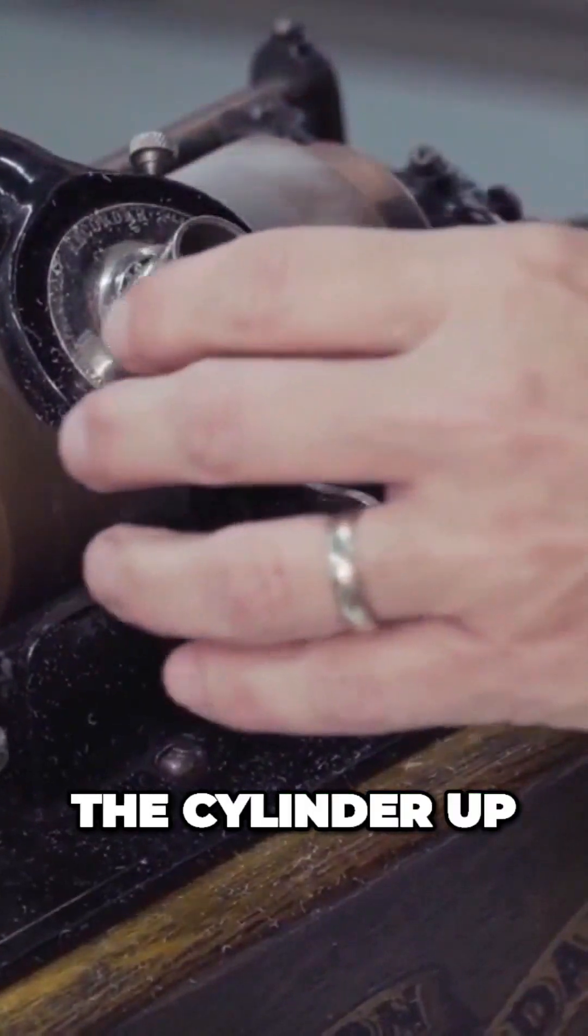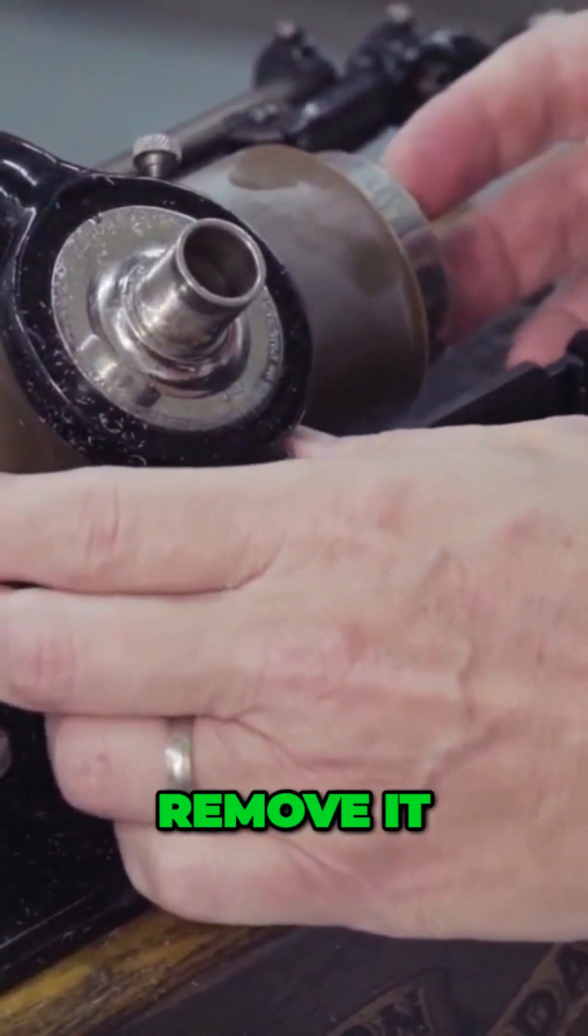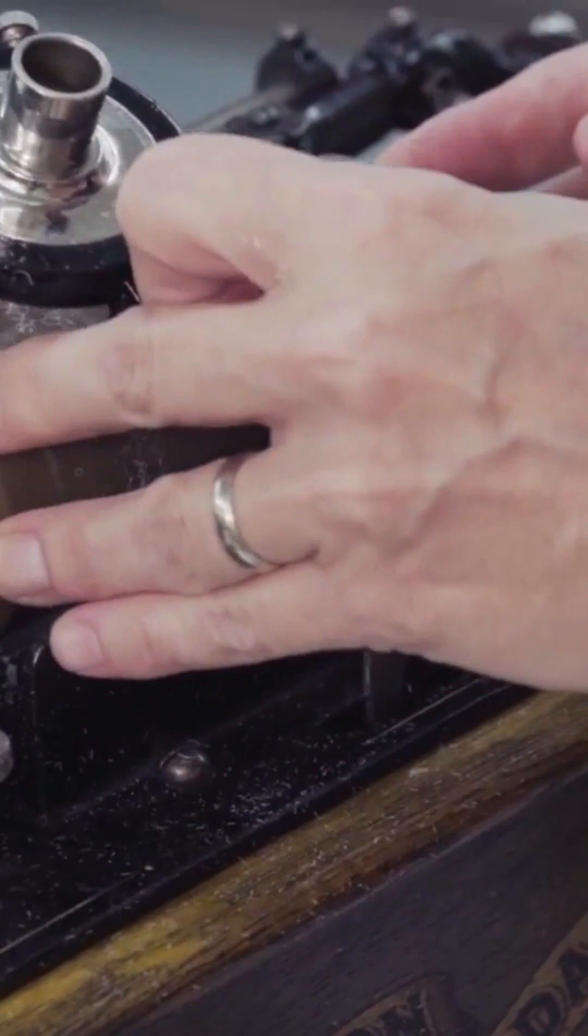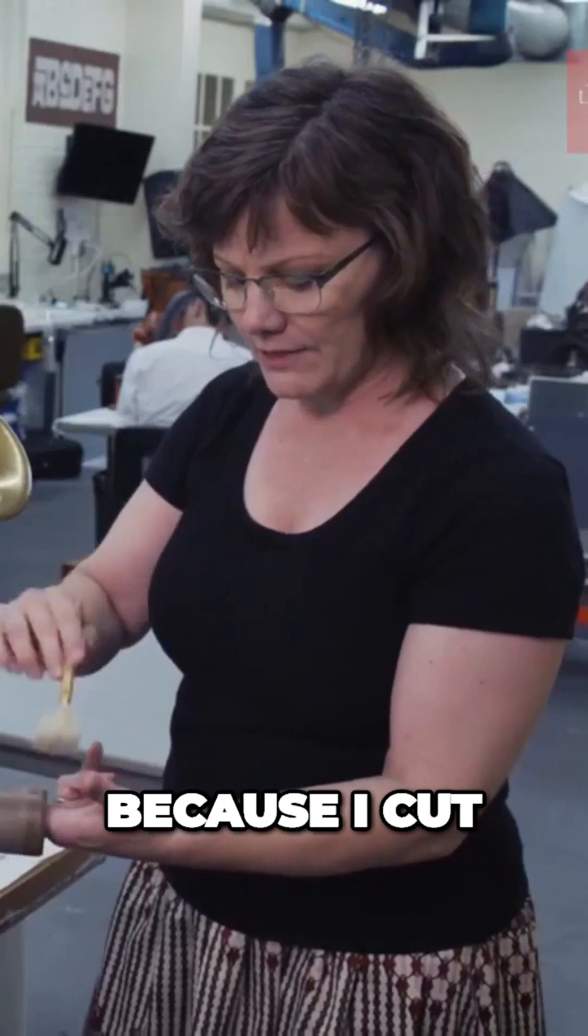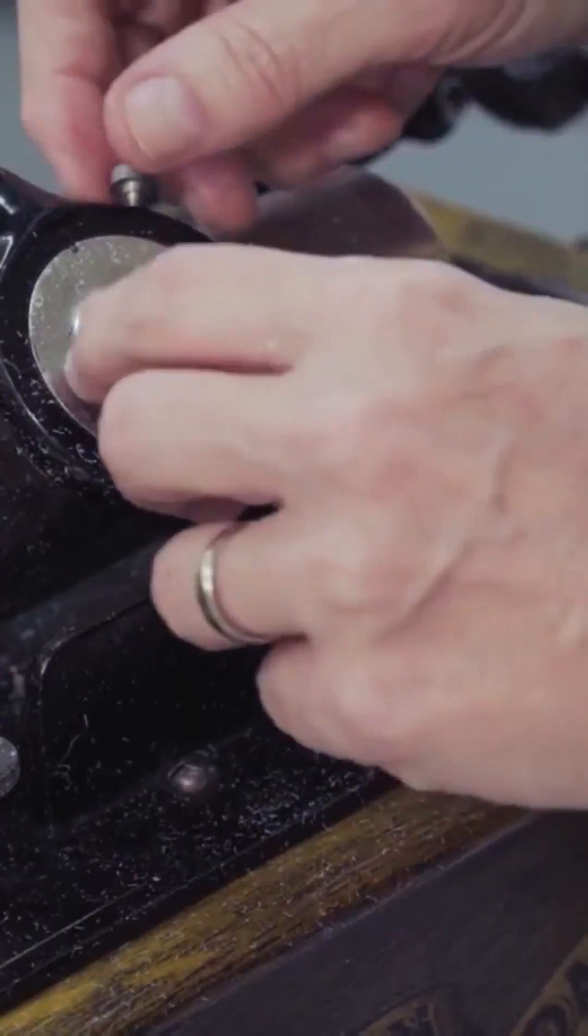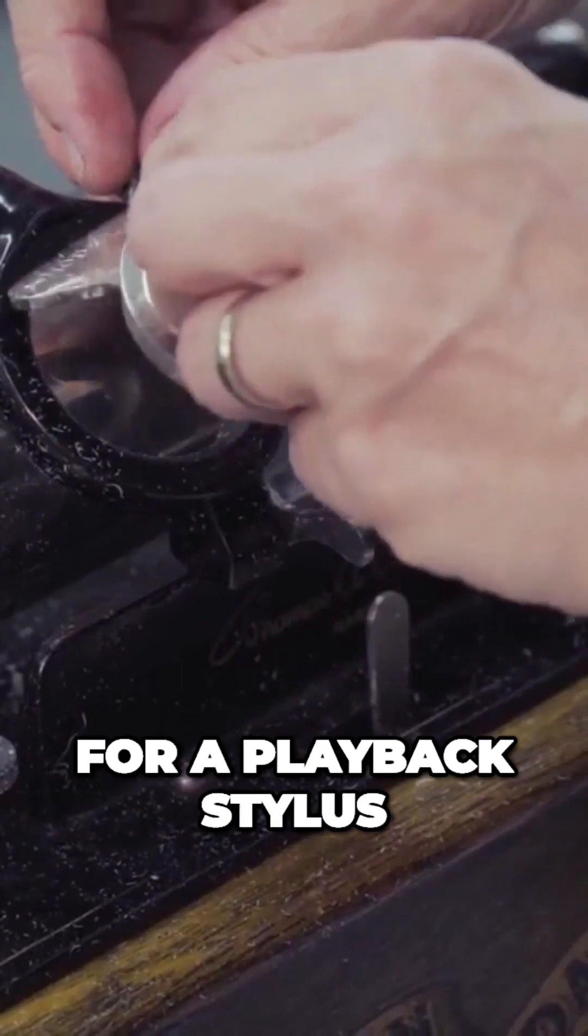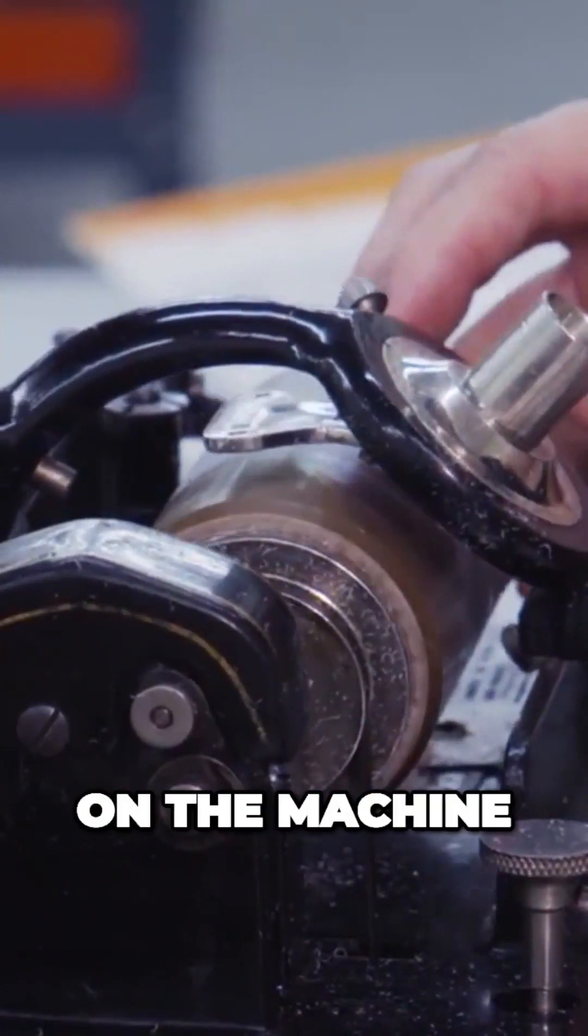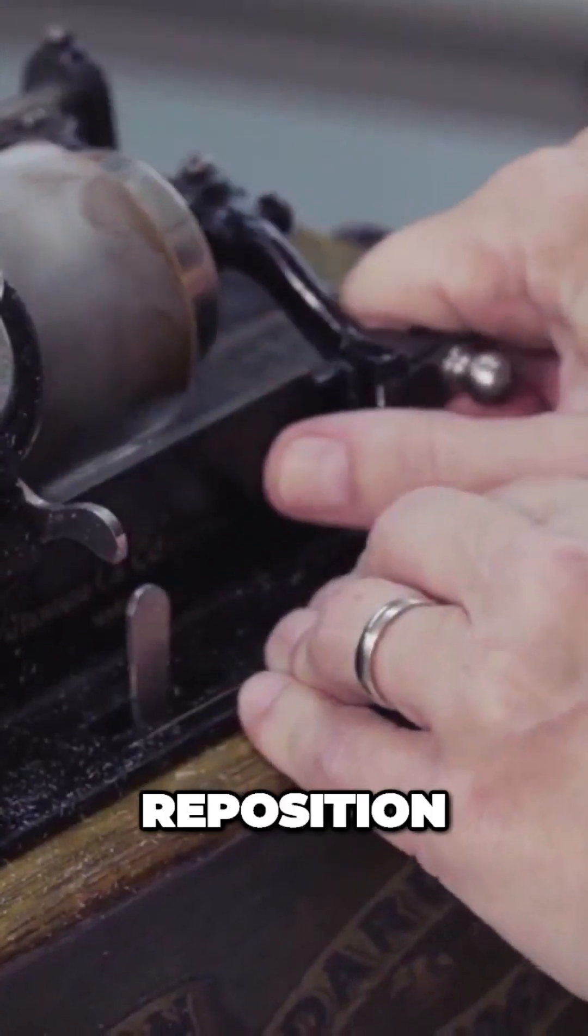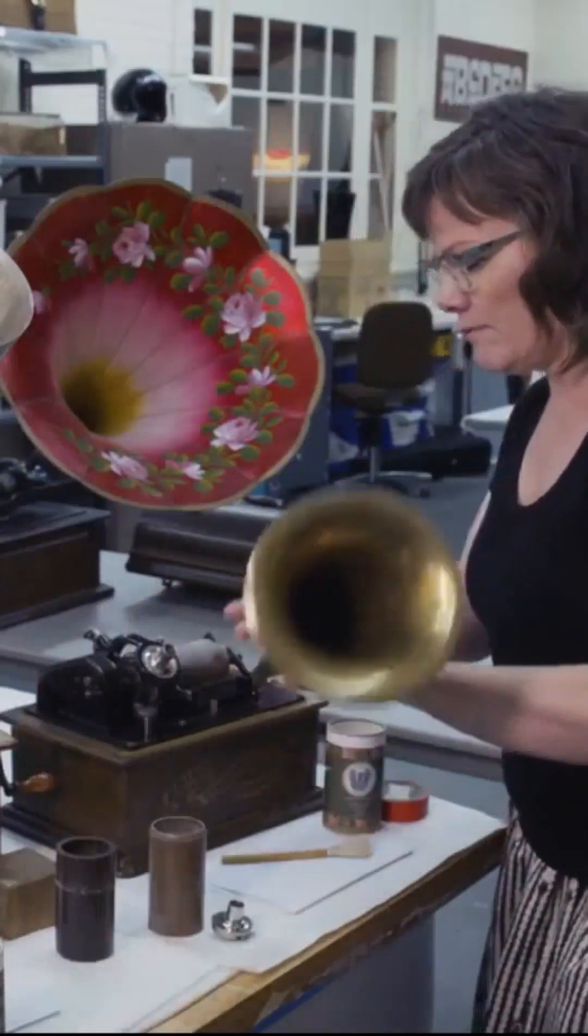So now I can lift the cylinder up, remove it and brush off the swarf because I cut through the wax. Switch out my cutting stylus for a playback stylus, put it back on the machine, reposition the horn back.